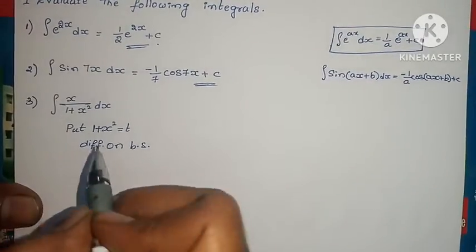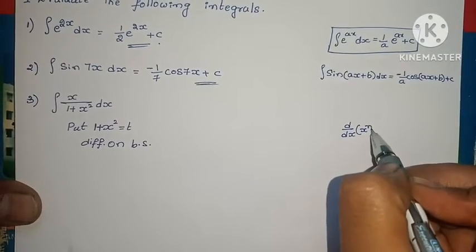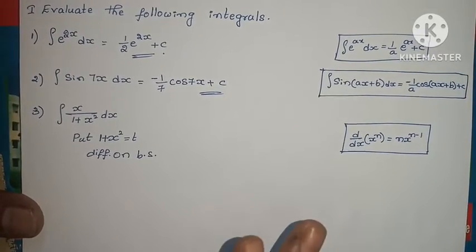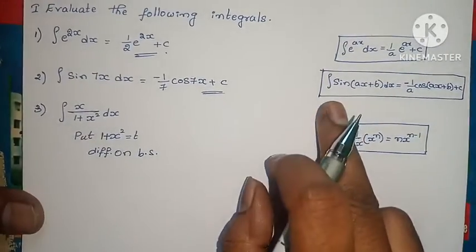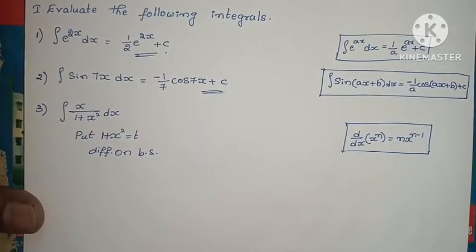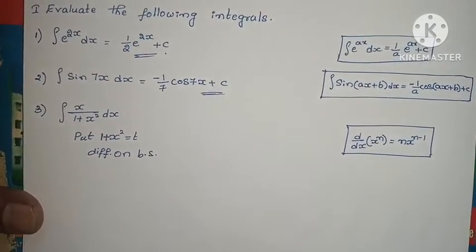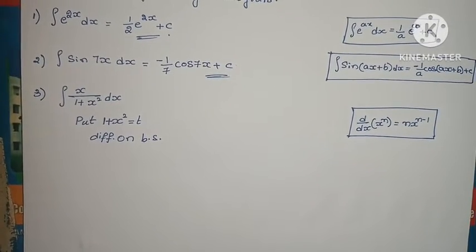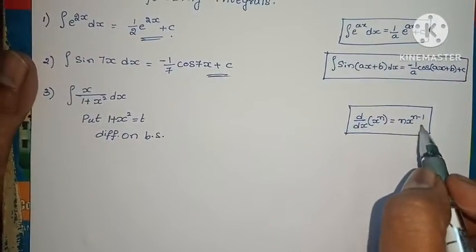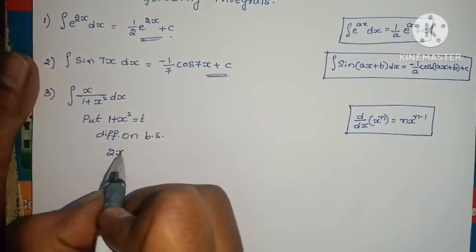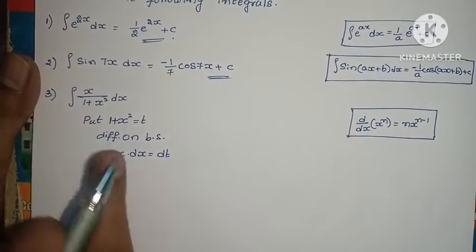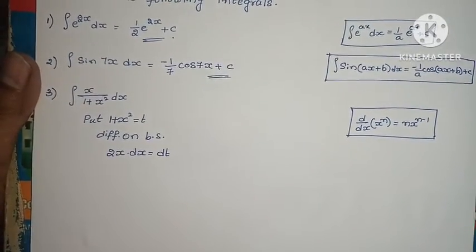d/dx of constant is 0. d/dx of x^n equals n · x^(n−1). Applying this: 2x^(2−1) equals 2x. So 2x · dx equals dt. Here we only have x in the numerator, so we multiply and divide by 2 to adjust. So multiply and divide by 2.